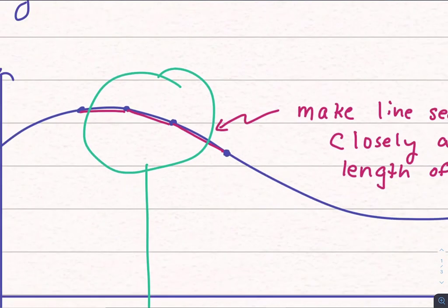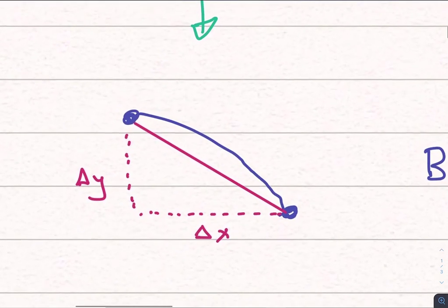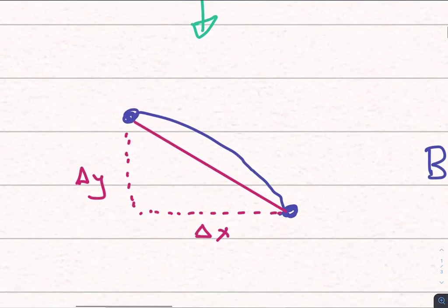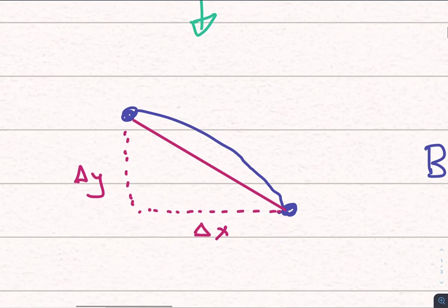So let's zoom in on this. If this is what we have, we have that line segment in pink, that straight line, and the blue line is the curve that it's trying to approximate.